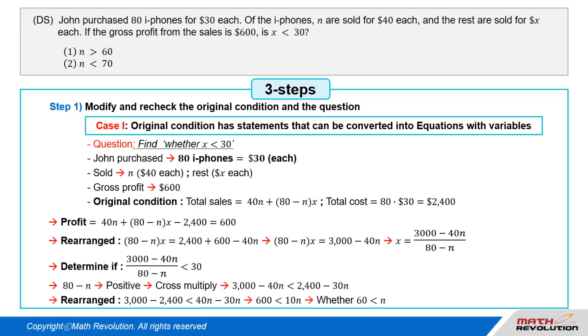Now, 80 minus N is positive, so we can cross multiply to get whether 3,000 - 40N is less than 2,400 - 30N. This can be rearranged to whether 3,000 - 2,400 is less than 40N - 30N, whether 600 is less than 10N, or whether 60 is less than N.